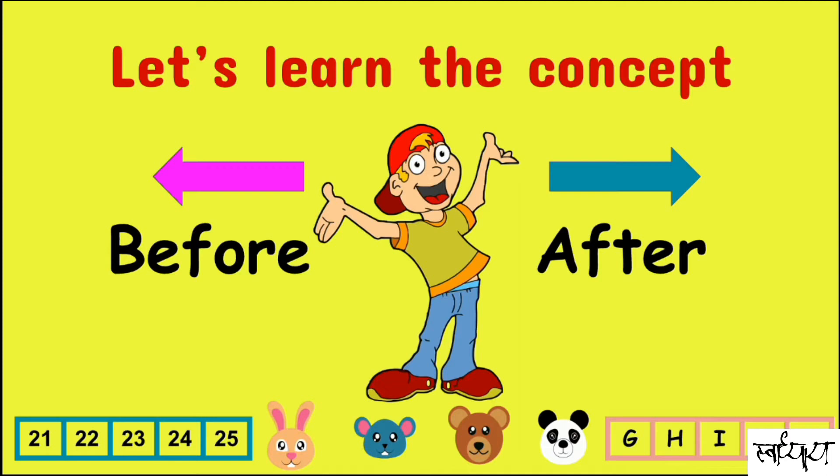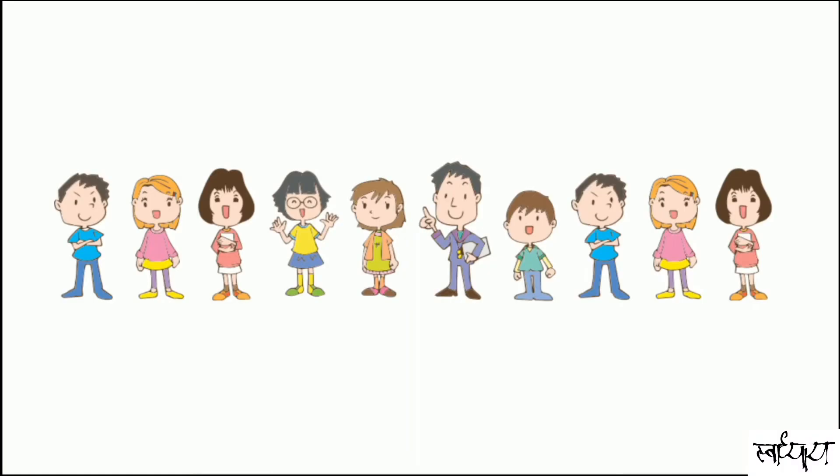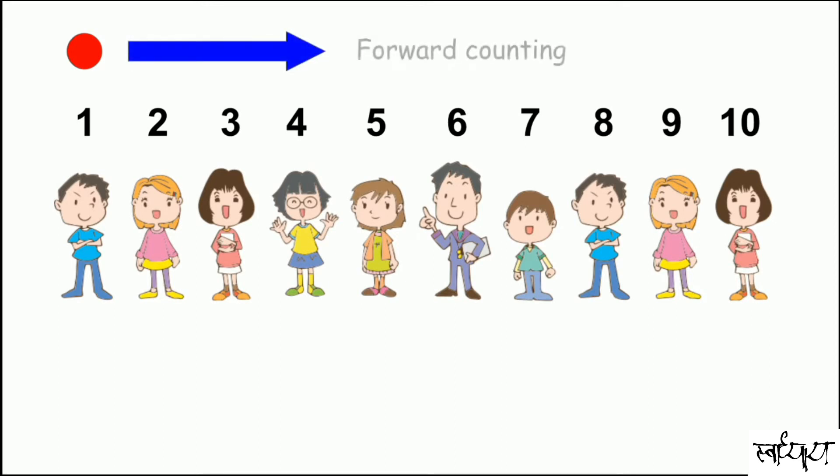Watch the full video and enjoy. Look, these kids are waiting for us. Let's count the kids: one, two, three, four, five, six, seven, eight, nine, ten. We started counting here and we counted this way. This is called forward counting.